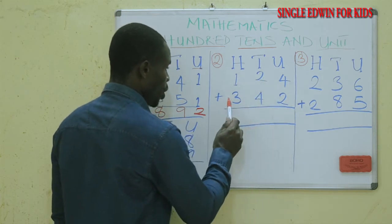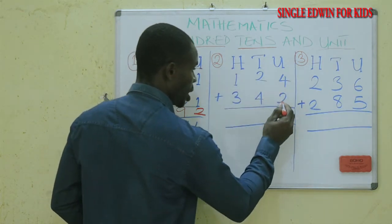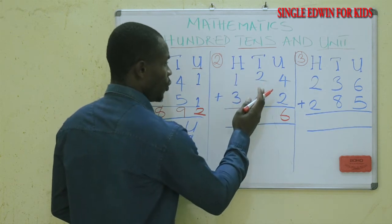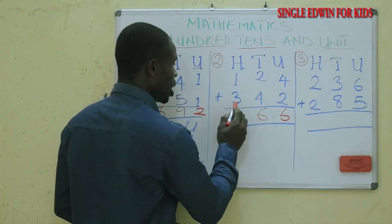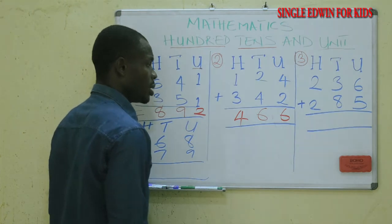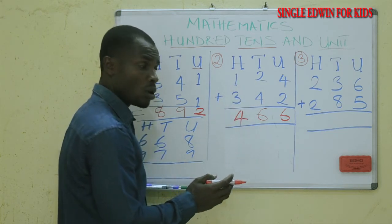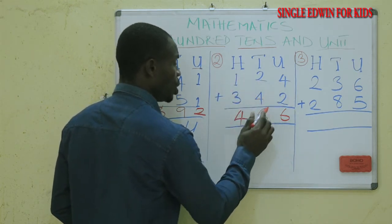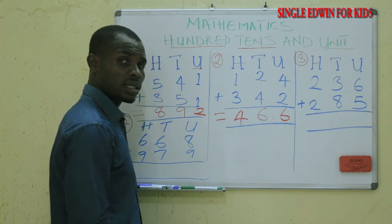We go to number two. We have one hundred and twenty-four plus three hundred and forty-two. We start from the unit: four plus two is six. Then two plus four is six. Then one plus three is four. So the unit is six, the tens is six, and the hundred is four. One hundred and twenty-four plus three hundred and forty-two is equal to four hundred and sixty-six.